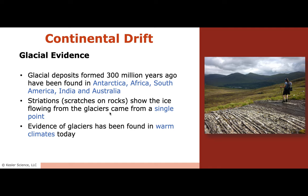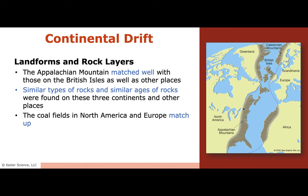Glacial evidence: glacial deposits formed about 300 million years ago have been found in Antarctica, Africa, South America, India, Asia, and Australia. These striations — big scratches on rocks — show how ice flowed from glaciers and came from a single point. Evidence of glaciers like these striations has been found in warm climates today, which shows those places must have been cold once. Also, landforms and rock layers: the Appalachian Mountains here match up with mountains on the British Isles and other continents. And coalfields found in North America and Europe match up, even though they're completely across the world from each other.